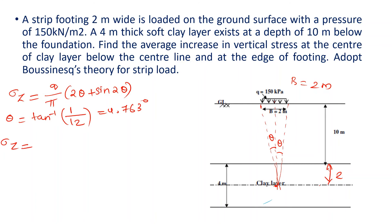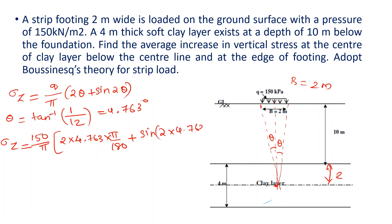Substituting into the equation: σz = (150/π) × (2θ + sin 2θ). The value of θ must be in radians for the 2θ term and degrees for sin 2θ. The final answer for vertical stress below the center line is 15.83 kN/m².